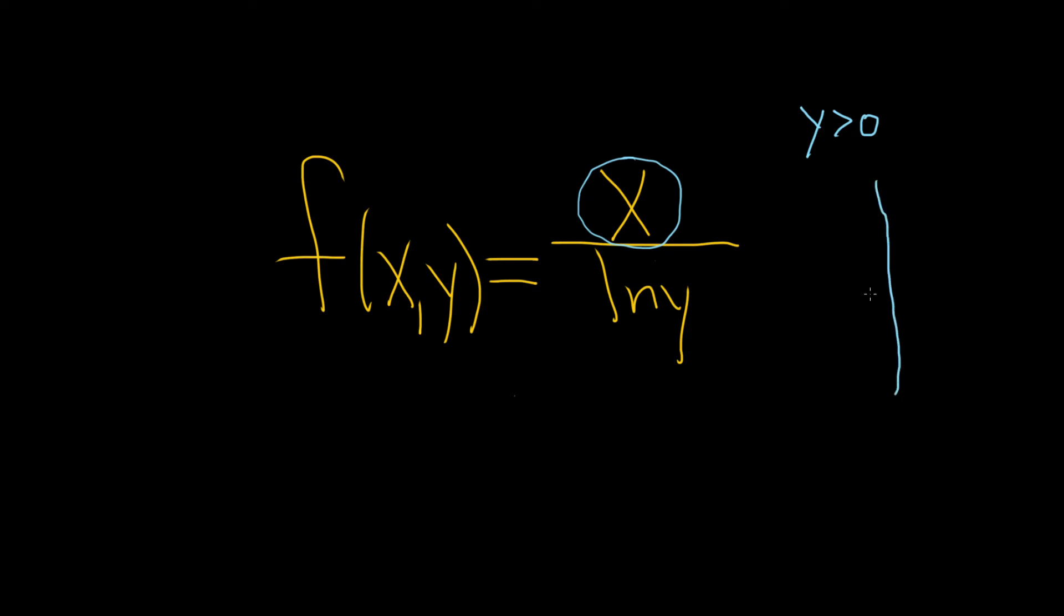So if you think about the graph of the natural log, let me draw it here for you. It has a vertical asymptote at 0 and it does this. So from the graph you see that the domain is you can only have positive values of this. So y has to be greater than 0.